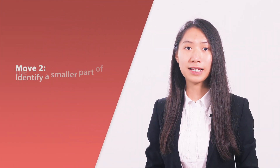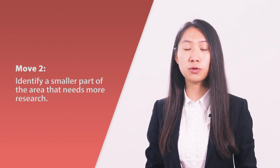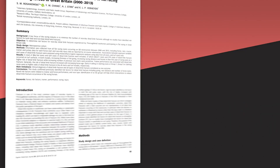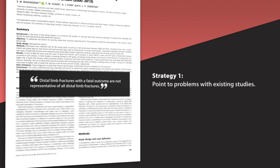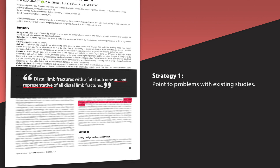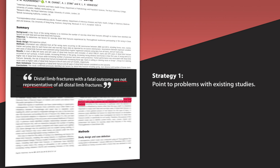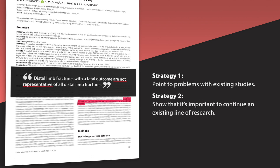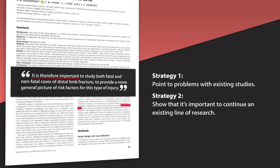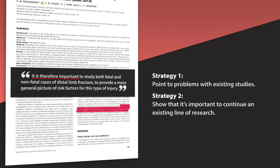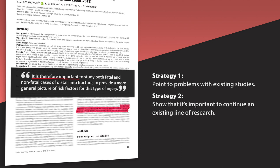The next move is to identify smaller parts of the area that need more research. To do this, you can choose different strategies. You can point out imperfections in the existing research: 'Distal limb fractures with a fatal outcome are not representative of all distal limb fractures.' In other words, looking only at fatal outcomes is not optimal. You can also show that it's important to continue an existing line of research: 'It is therefore important to study both fatal and non-fatal cases of distal limb fracture to provide a more general picture of risk factors for this type of injury.'